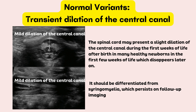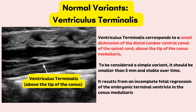It is important to recognize normal variants to avoid misinterpretation as pathologic findings. Transient dilation of the central canal: the spinal cord may present a slight dilation of the central canal during the first weeks of life in many healthy newborns, which disappears later on. It should be differentiated from syringomyelia, which persists on follow-up imaging. Ventriculus terminalis corresponds to a small distension of the distal lumbar central canal of the spinal cord above the tip of the conus medullaris. To be considered a simple variant, it should be smaller than 5 mm and stable over time. It results from incomplete fetal regression of the embryonic terminal ventricle in the conus medullaris.